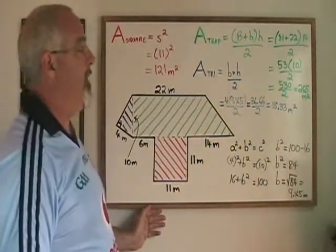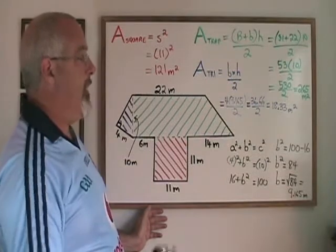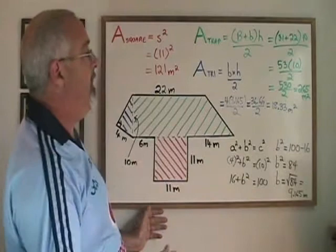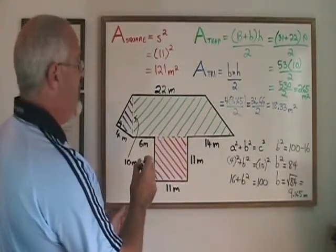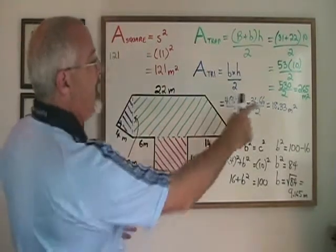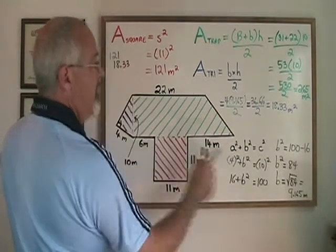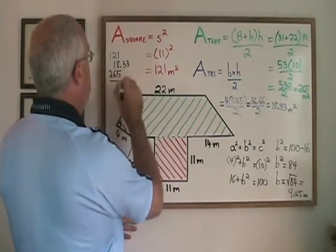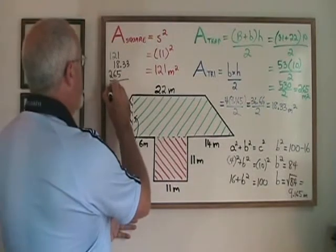And I have found the area of all three figures, the triangle, the right trapezoid, and the square. The only thing left to do is to add them together so that I can give my final answer the area of the overall shape. I don't have much room, but I will write where I can find the space. I have 121 plus 18.33 plus 265. I add these together and I get 404.33.